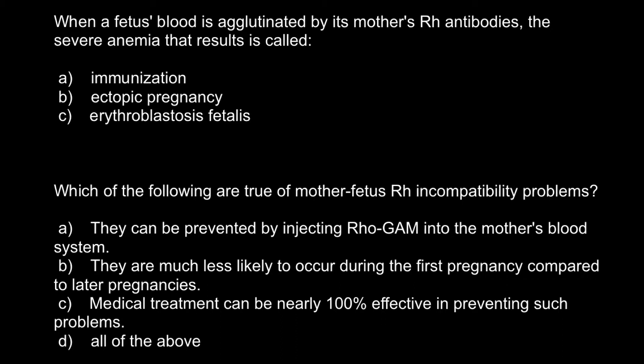Here is the first question: When a fetus's blood is agglutinated by its mother's RH antibodies, the severe anemia that results is called — and here are three answers to choose from: Answer A, Immunization; Answer B, Ectopic pregnancy; Answer C, Erythroblastosis fetalis.